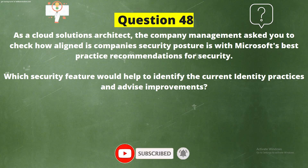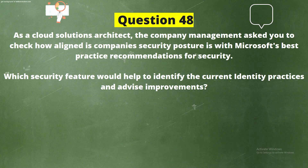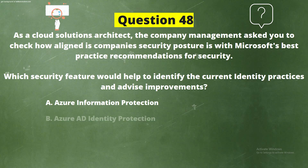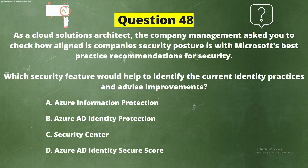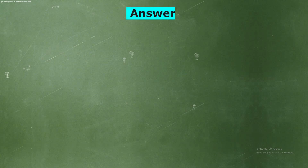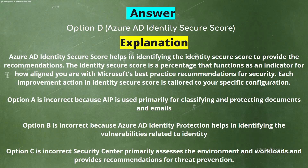Question 48: As a cloud solutions architect, the company management asked you to check how aligned the company's security posture is with Microsoft's best practice recommendations for security. Which security feature would help to identify the current identity practices and advise improvements? The correct answer is Option D, Azure AD Identity Secure Score. Explanation: Azure AD Identity Secure Score helps in identifying the Identity Secure Score and provides recommendations. The Identity Secure Score is a percentage that functions as an indicator for how aligned you are with Microsoft's best practice recommendations for security.